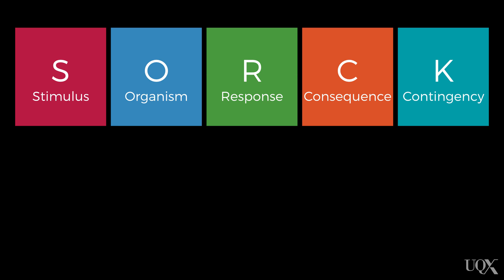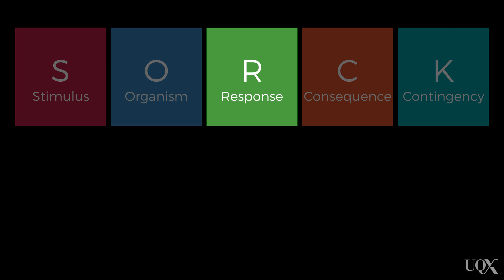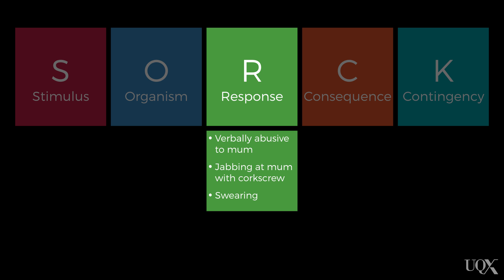The easiest place to start in looking at a SORCK analysis is the response column. The response column contains the specific behaviors that make up the presenting problem. Some of the specific behaviors listed in this SORCK analysis include verbally abusing mum, jabbing a corkscrew at mum, and swearing.